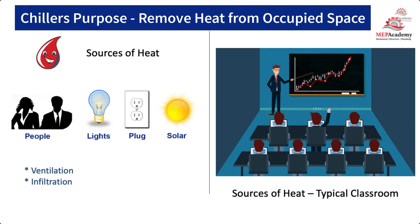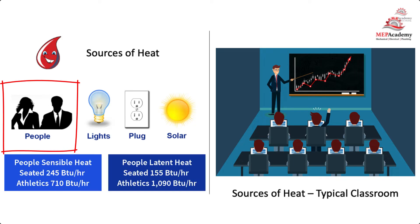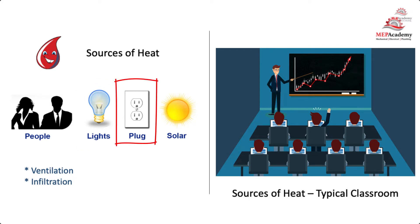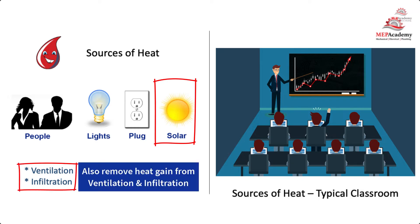The main purpose of the chiller is to remove heat from the occupied space. Heat comes from people, who generate heat based on their activity level — sitting generates less heat than exercising. You also have lights, which produce different amounts of heat, plug loads like computers and machinery, and solar load coming through windows or conducted through walls due to the temperature difference between outdoors and indoors. The resistance of the wall determines a certain amount of heat gain — that's the heat we want to remove and bring to the chiller to cool the space.